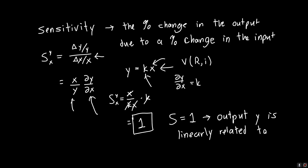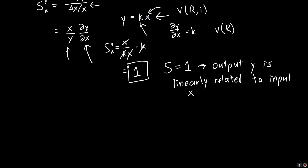This doesn't have to be inputs and outputs — it can be any mathematical function. For example, the voltage is linearly dependent on the resistance, or the conductance if you prefer. So a sensitivity of one just means there's a linear relation. What if we've got a quadratic relation — what if y is equal to some coefficient times x squared?